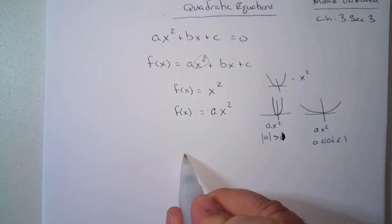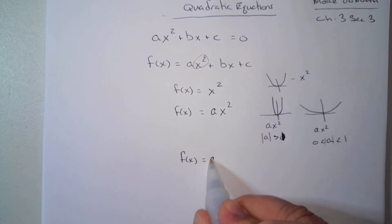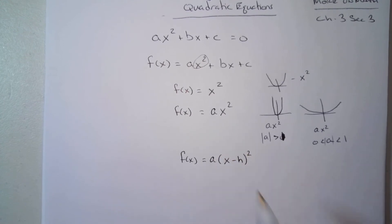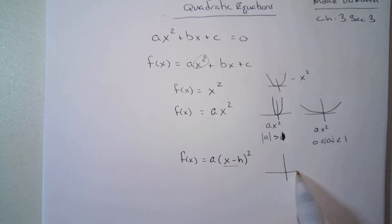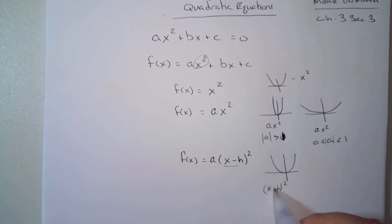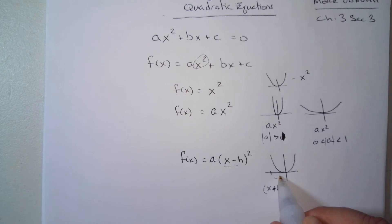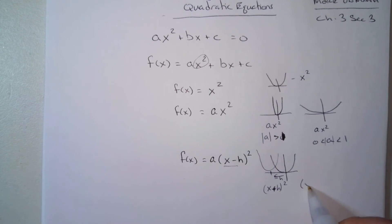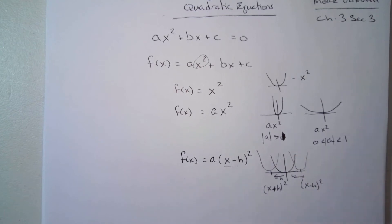Now, what happens if x itself changes? If we have x minus h, anything that happens inside the parentheses is a horizontal shift. If it's x plus h squared, it shifts to the left — negative h units. If it's x minus h squared, it shifts to the right h units.